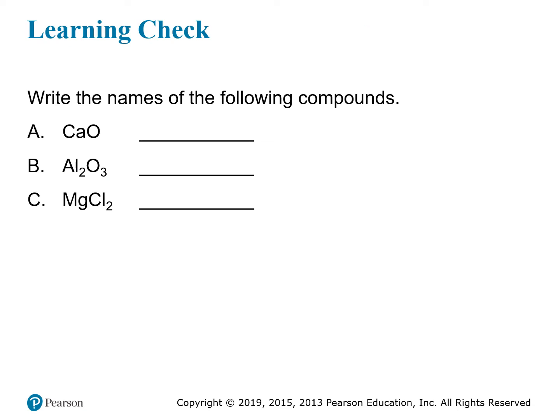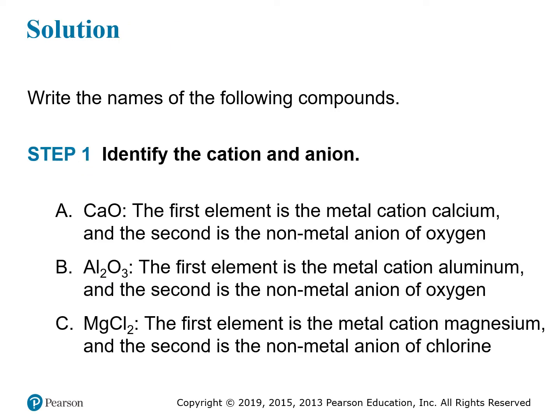Here are three more examples of ionic compounds. When naming a compound, the first thing you want to do is check whether it's ionic or covalent. If the first element written in the formula is a metal — like it is for all of these compounds — then you're definitely dealing with an ionic compound. The first step is to identify the cation and the anion. In CaO, the first element is calcium, which is the cation, and the second element is oxygen, the anion.